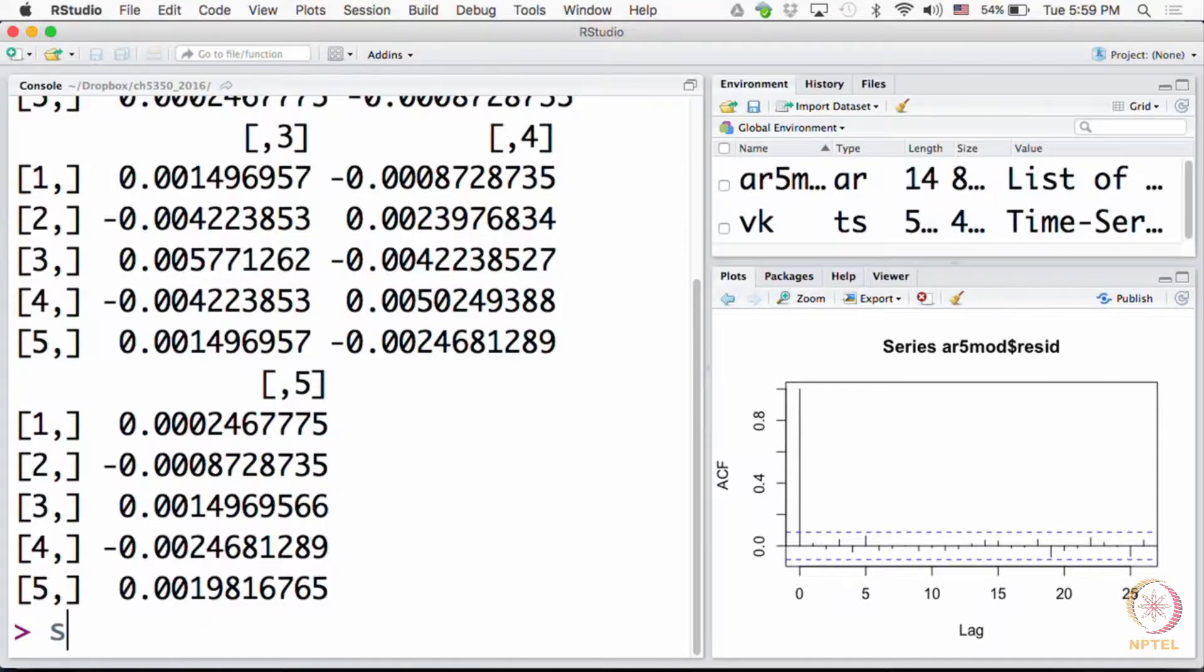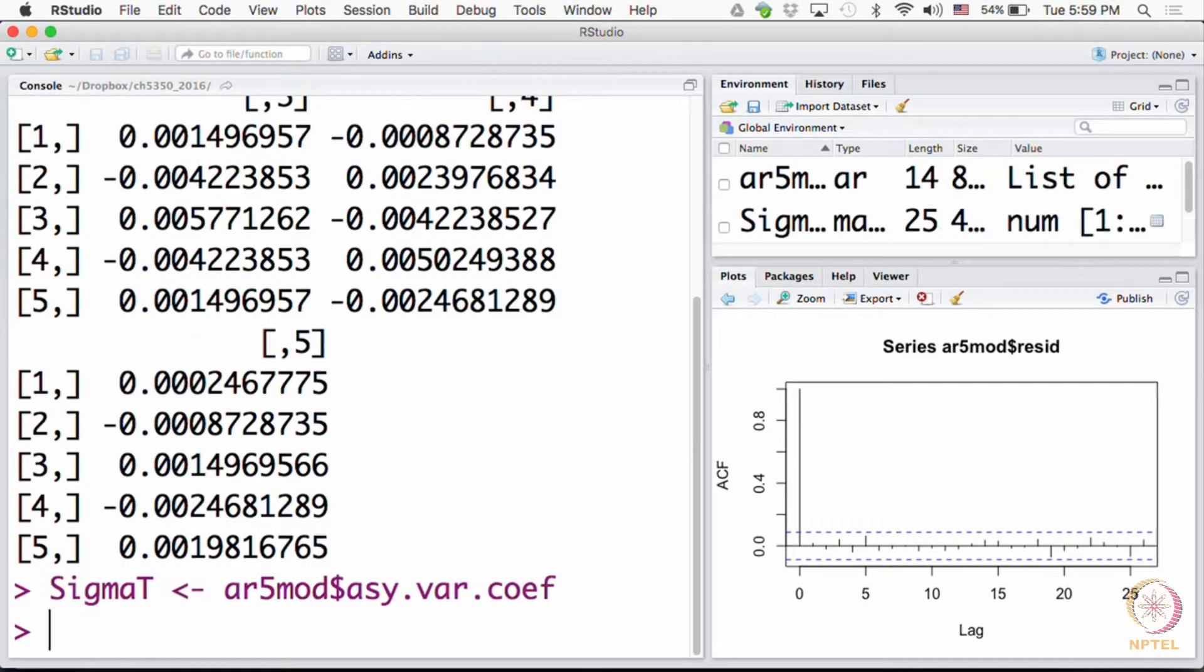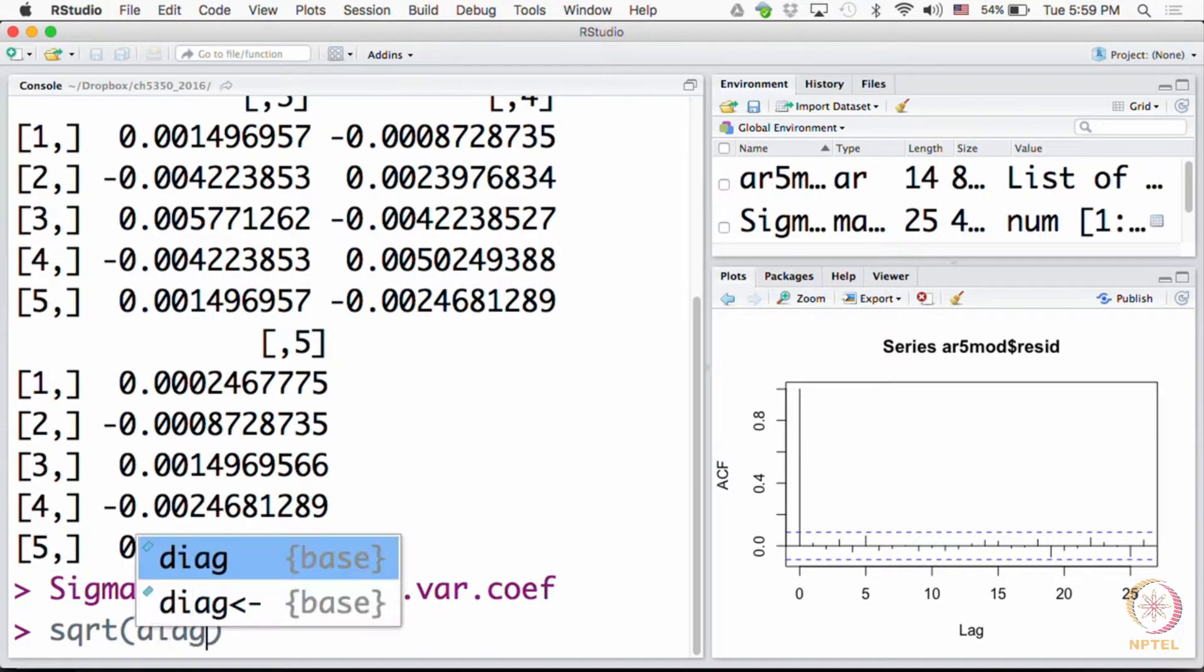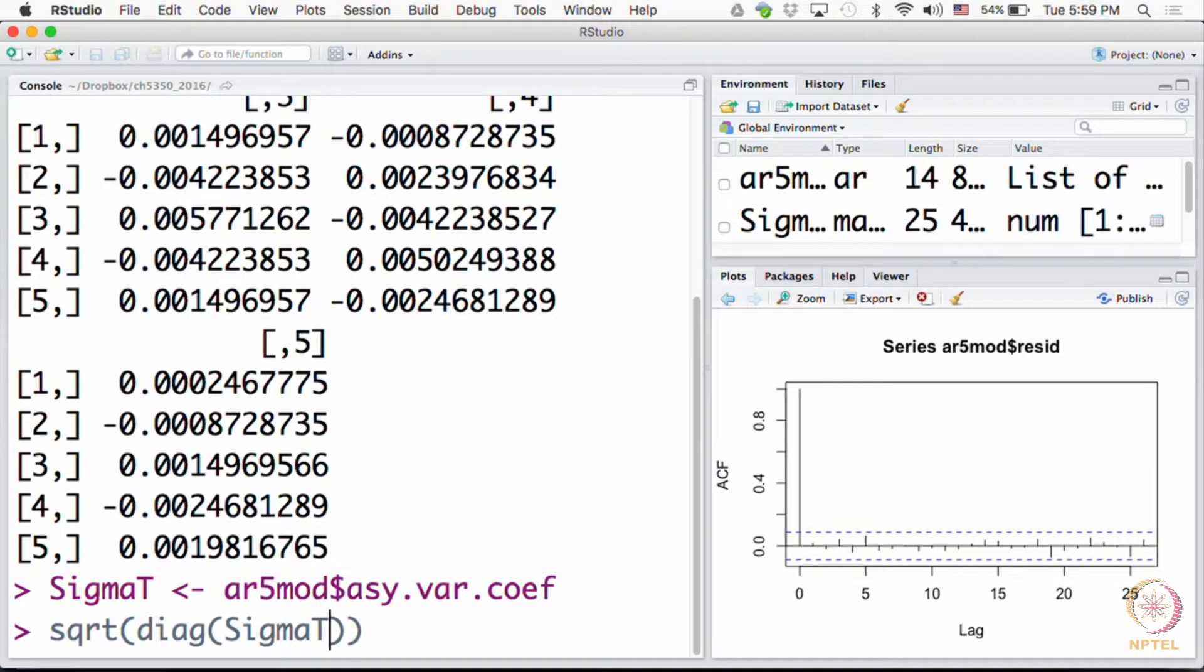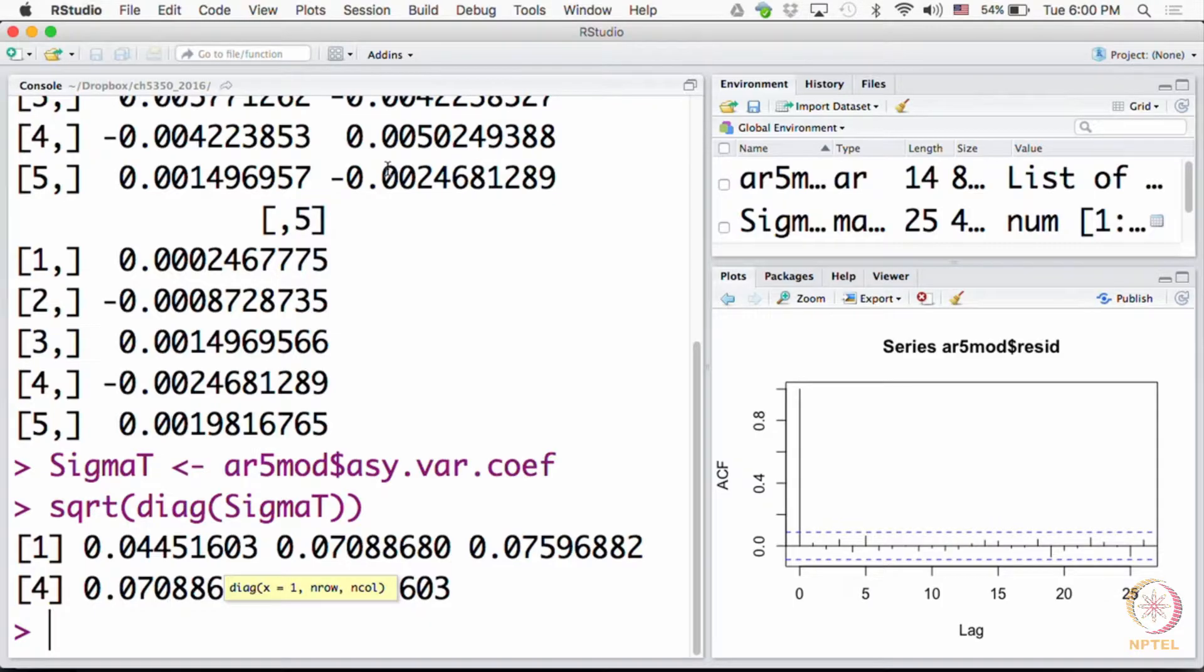Now what we shall do is, since we want the errors, standard errors, and standard errors are the square root of these elements here, we will take the square root of the diagonal. Let's write here sigma t. This is our sigma t and then we ask for square root of the diagonal of sigma t. These are the errors that you see for the respective parameter estimates, but these errors have to be looked in conjunction with the estimates.